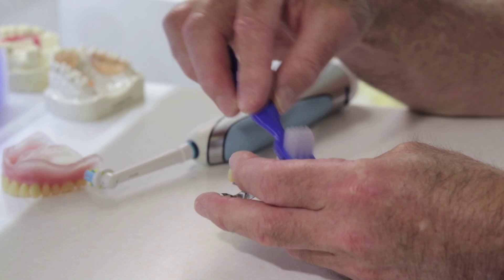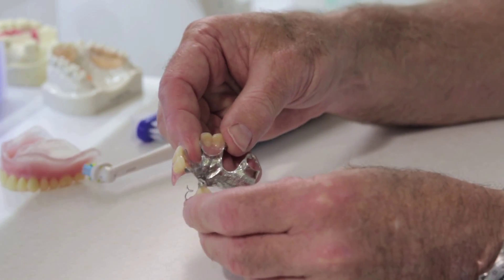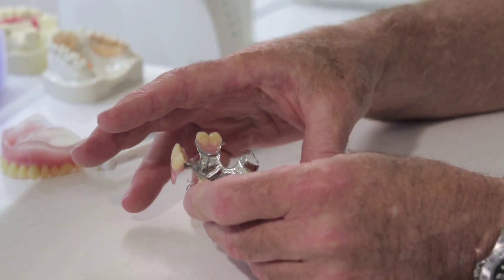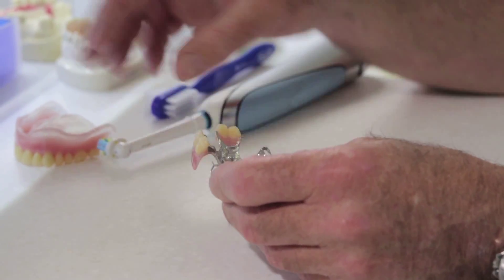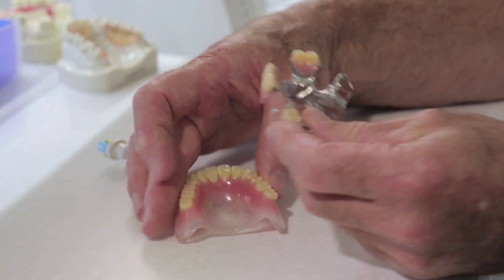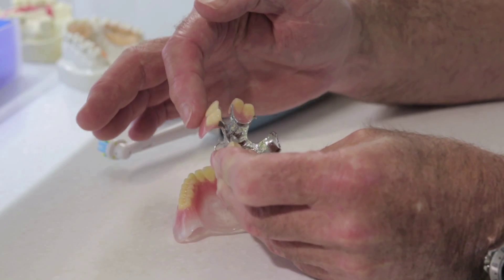It's important if you use any tablets such as Sterodent that you don't put them in hot water, you put them in cold water, otherwise for this type of denture and this one it can bleach the teeth.